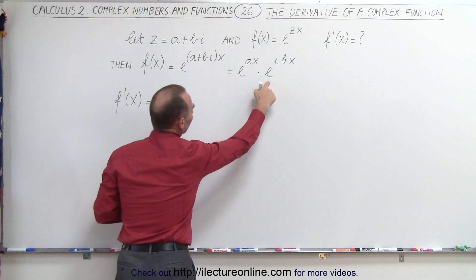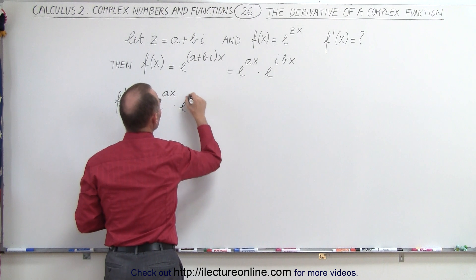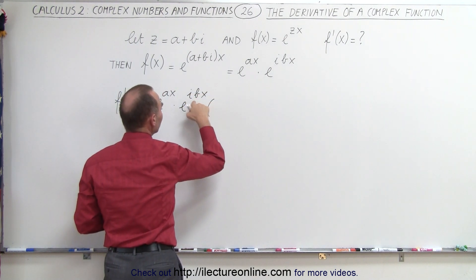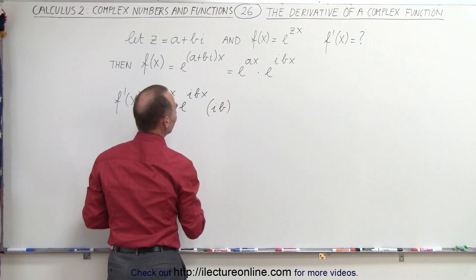times the derivative of the second. So that would be times e to the ibx times the derivative of the exponent, which would be i times b,